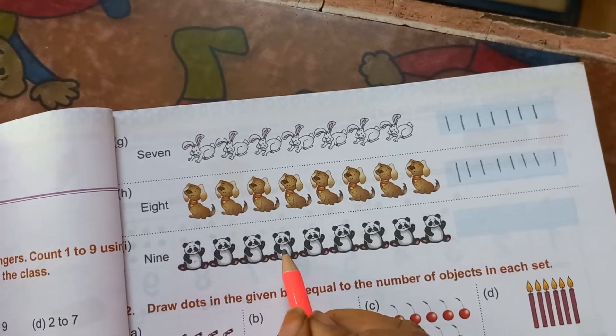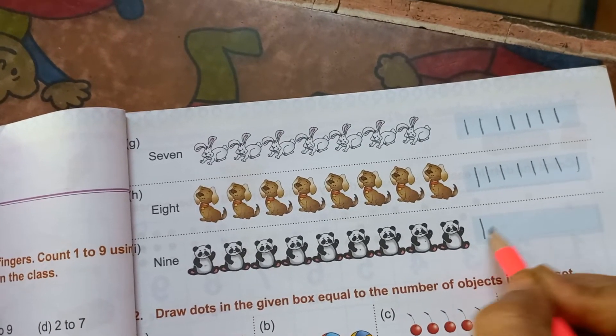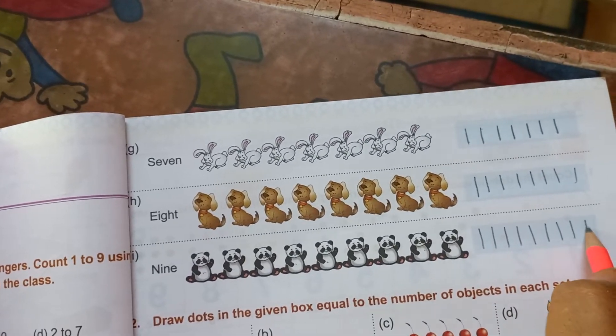One, 2, 3, 4, 5, 6, 7, 8, 9. So 9 lines. One, 2, 3, 4, 5, 6, 7, 8 and 9.